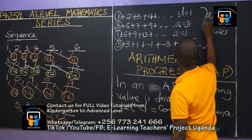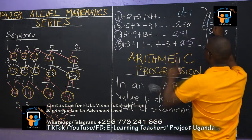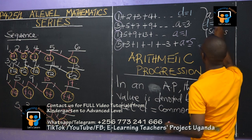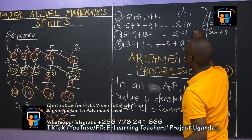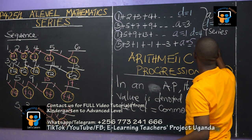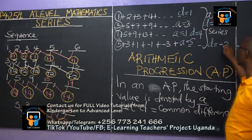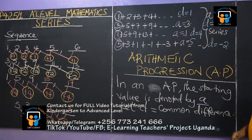In this case here, our D is 2. Here, our D is 4. Here, our D is negative 2.